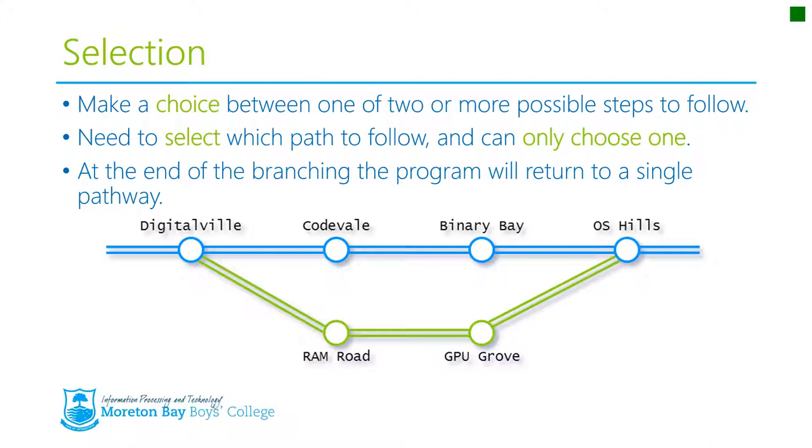So coming back to our train track analogy, our train can start and get to Digitalville. Once it gets to Digitalville, it has a choice. It can keep going along the same path and go to Codevale and Binary Bay, or it can go down the other path and go to RAM Road and GPU Grove. Once it's finished, it will come back and join back up at the main program. It can't choose to take both paths; it has to choose one or the other. This is what we call selection.